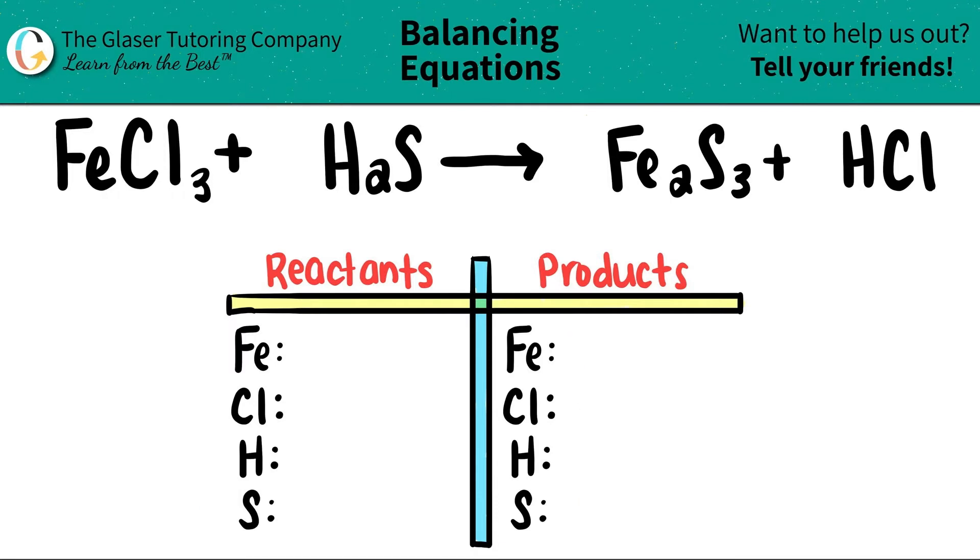So let's start balancing, well actually let's just name how many we have first, and then we'll get to balancing. So let's start with the first one. For iron, I have one iron because I don't see a subscript next to it. That means there's one.